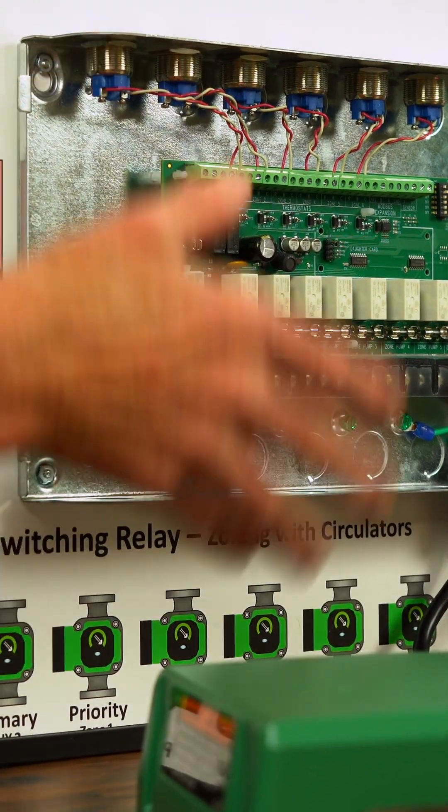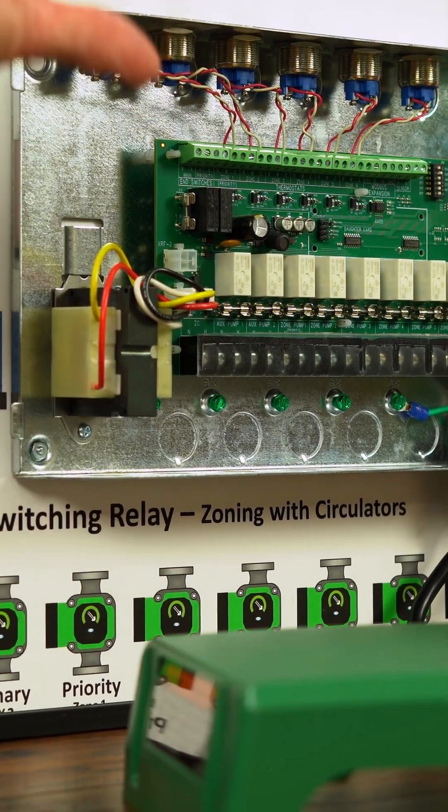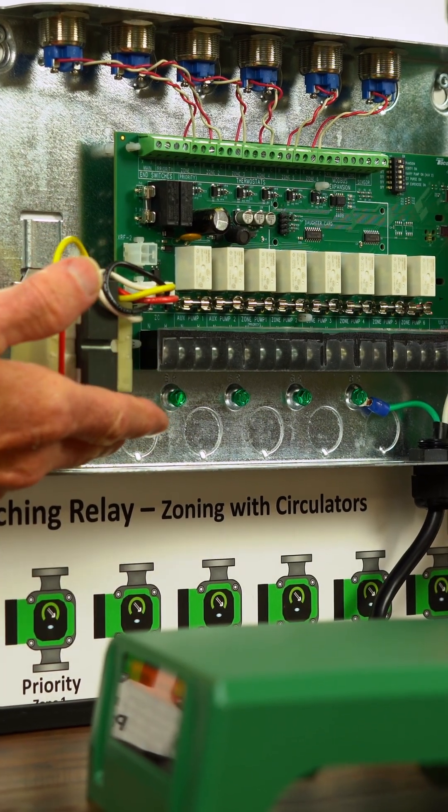So obviously we have our standard top and bottom knockouts, but now if I wanted to have that clean job on a panel, hide all my wires out through the back, I have that option to do it here.